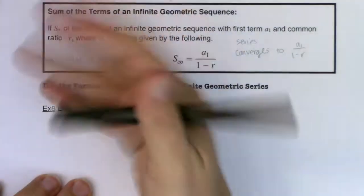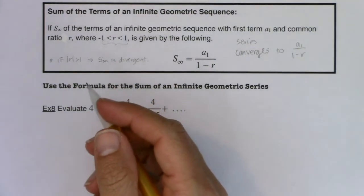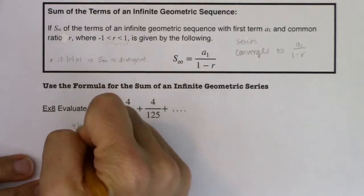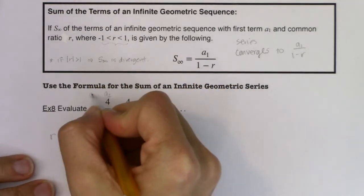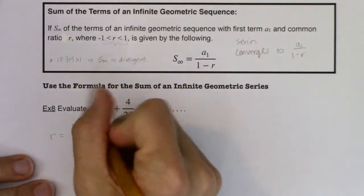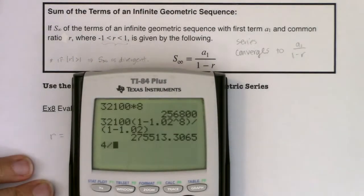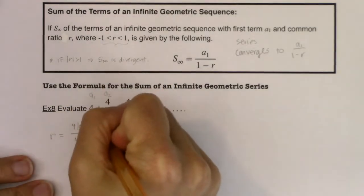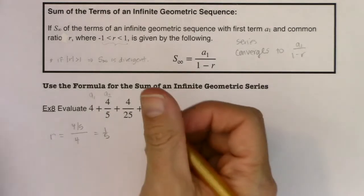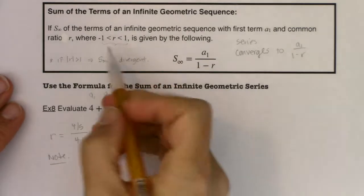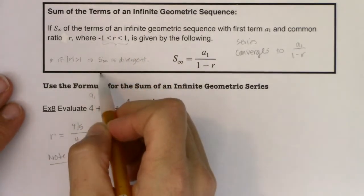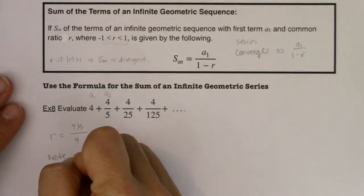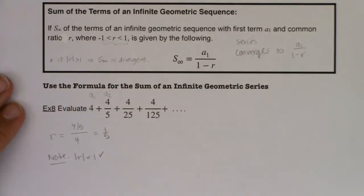Maybe you didn't see the common ratio of 1/5 right away. We can verify: r is the ratio of a current term to the previous term. Taking a sub 2 over a sub 1, that's 4/5 divided by 4, which gives 1/5. So we're multiplying each term by 1/5. Important to note: 1/5 is between negative 1 and 1, so the absolute value of r is less than 1. This means the series converges and we can apply the formula.